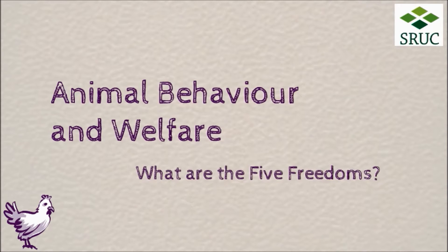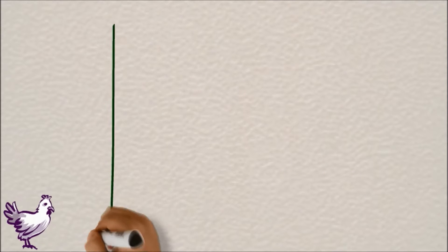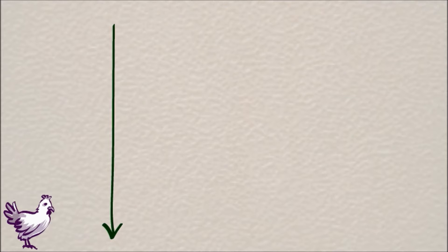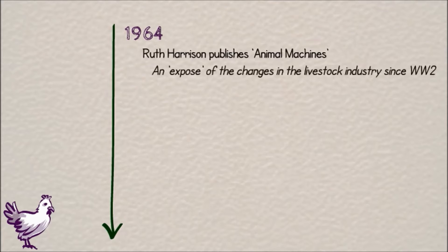What are the five freedoms? Animal welfare in the UK has a long history, but concern about farmed animal welfare and assessing animal welfare really came about in the early 60s with Ruth Harrison's book about animal machines. This was often thought of as an exposé of the livestock industry and the big changes it had seen since World War II.